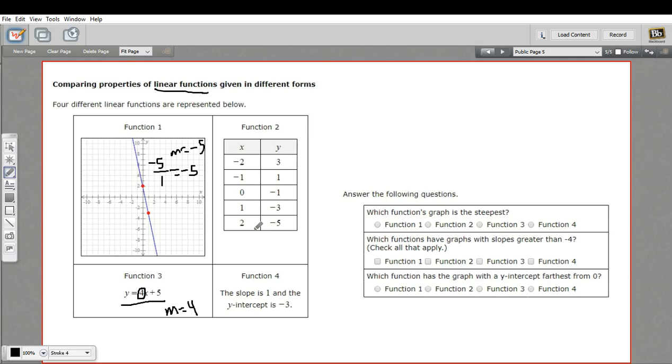How can we tell the slope from a table of values? Well, it's the amount it goes up or down over the amount it goes over. The amount it goes up or down would be the change in the y. From here, it goes from three down to one. That's a change of negative two. And it goes from negative two to negative one. That's a change of positive one. So the slope here is negative two.